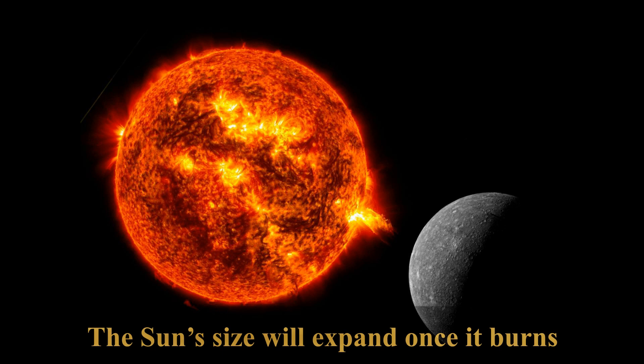The Sun's size will expand once it burns through the hydrogen and helium particles that are available. This process can take up to 130 million years. The Sun will then collapse and become a white dwarf, a small star with a high density.